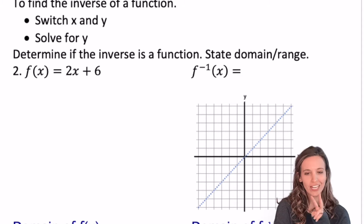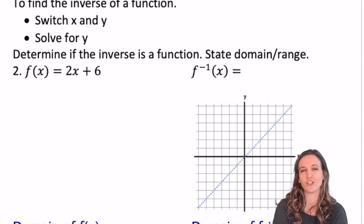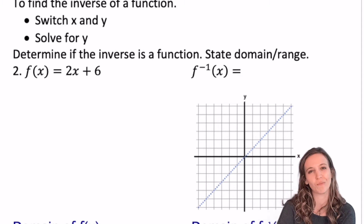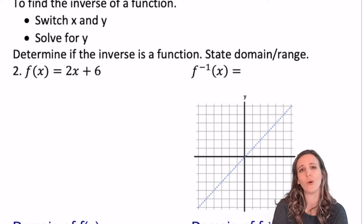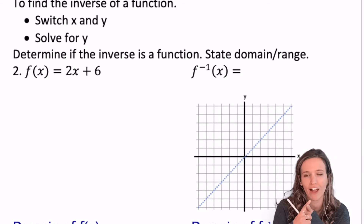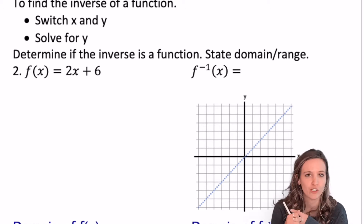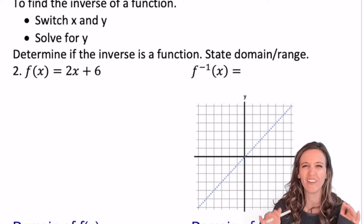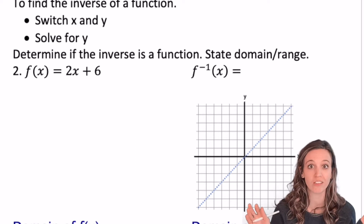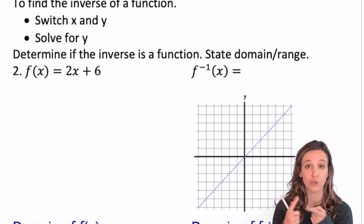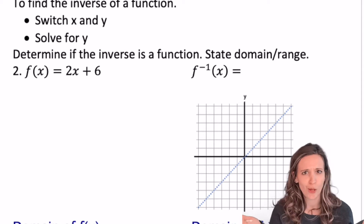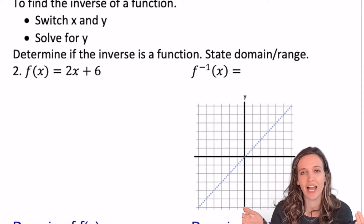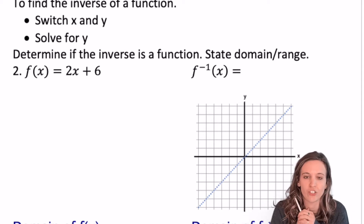Looking at number two: determine the inverse of the function and state the domain and range. We have f of x equals two x plus six. I'm going to end up graphing this, stating its domain and range, and all that. So before I even touch an inverse, let's graph f of x equals two x plus six — that's just slope-intercept form — and then we'll state its domain and range.